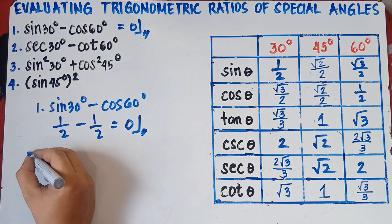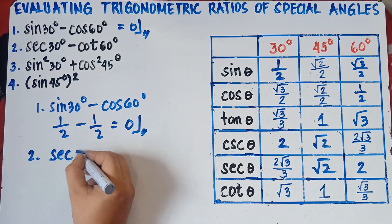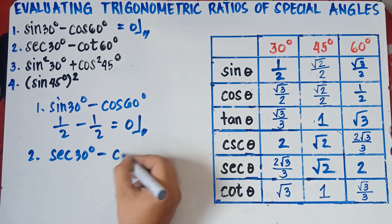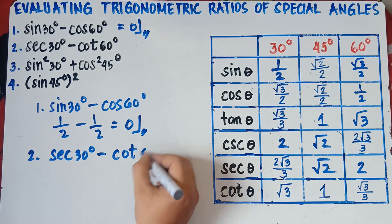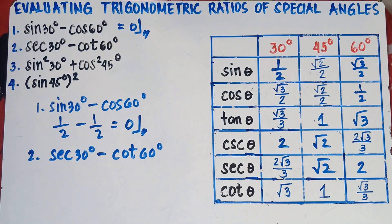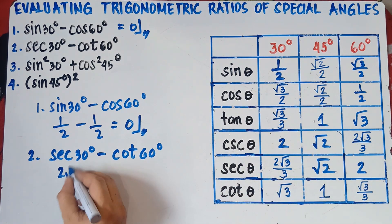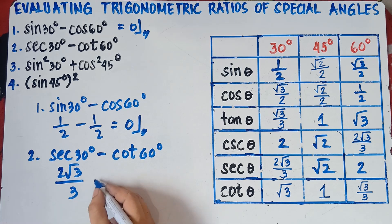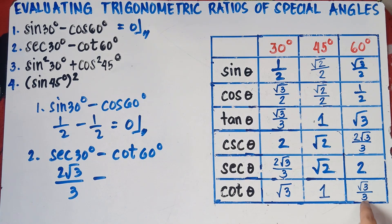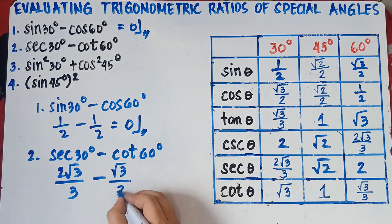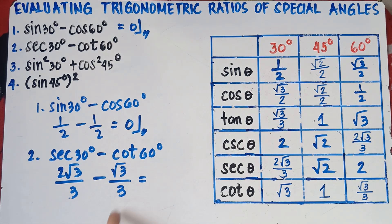Let's have number 2: secant 30 degrees minus cotangent 60 degrees. Secant 30 degrees is equivalent to 2√3 over 3, minus cotangent 60 degrees, which is √3 over 3. If you're subtracting fractions with the same denominator, simply copy the denominator.